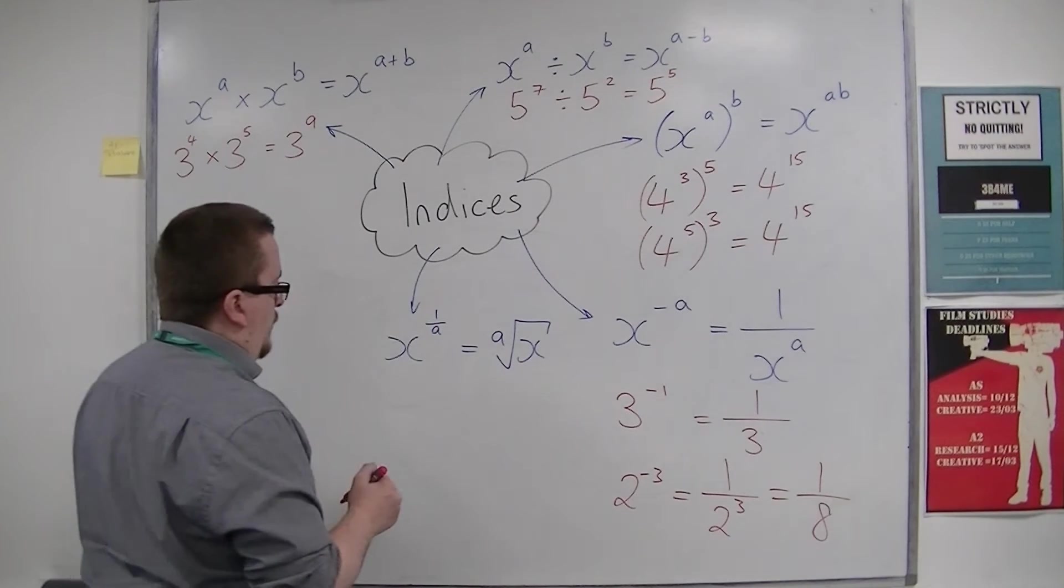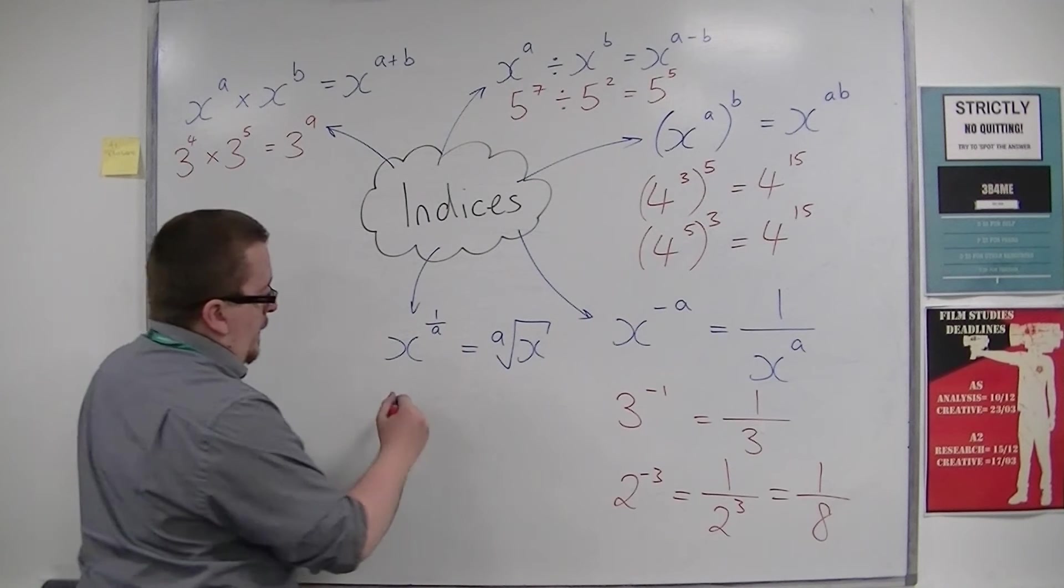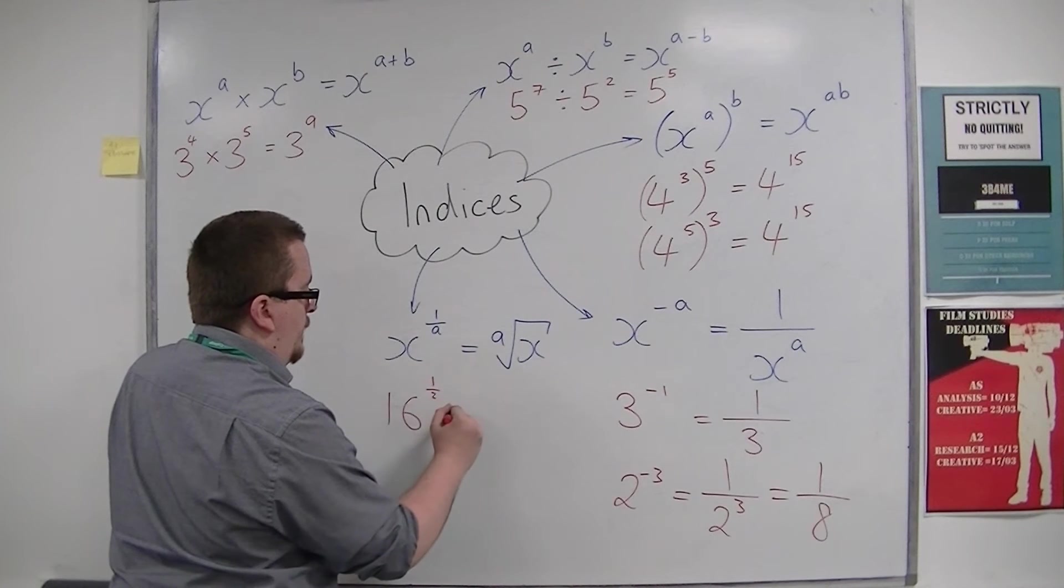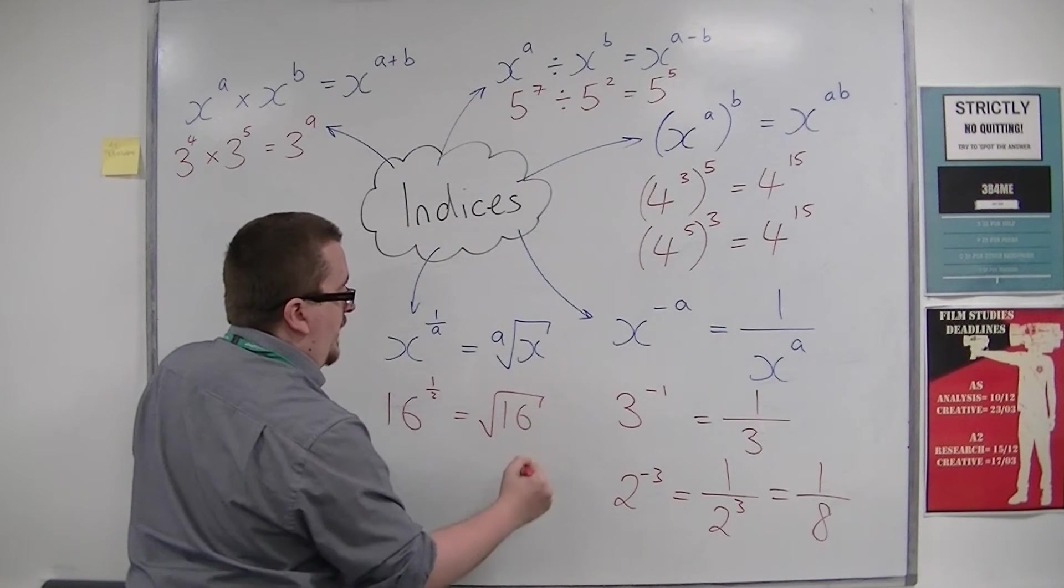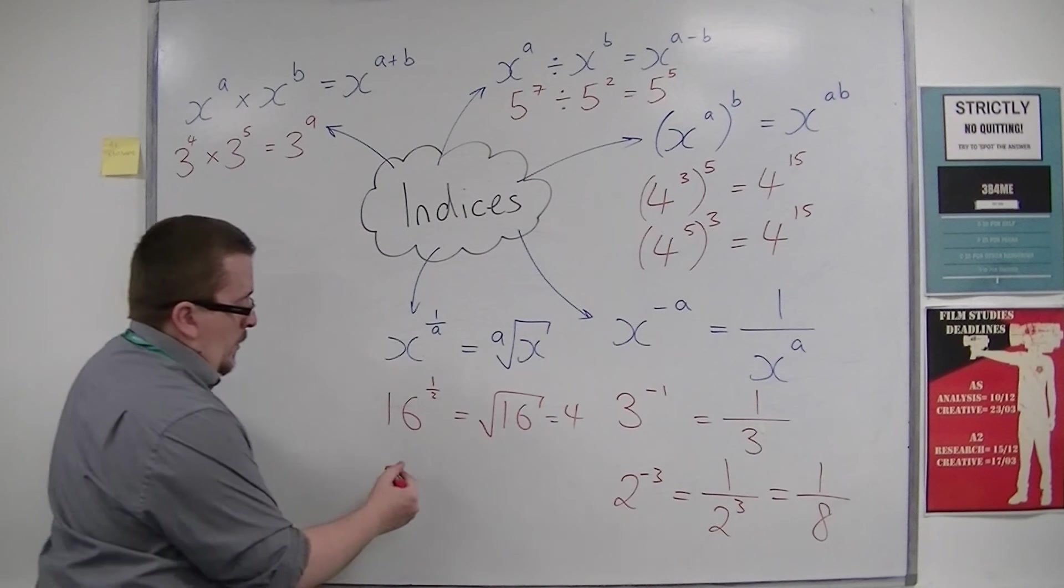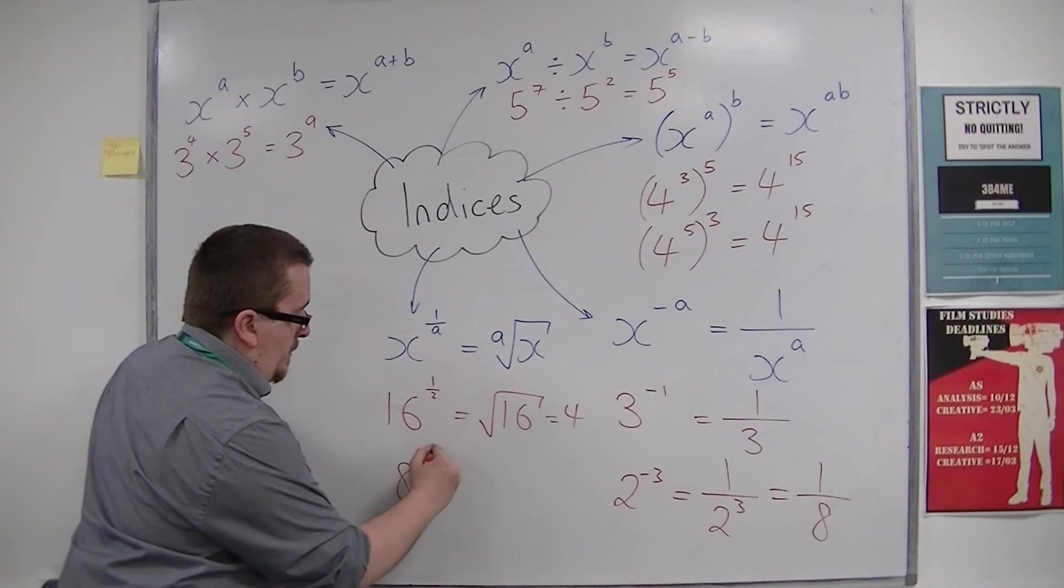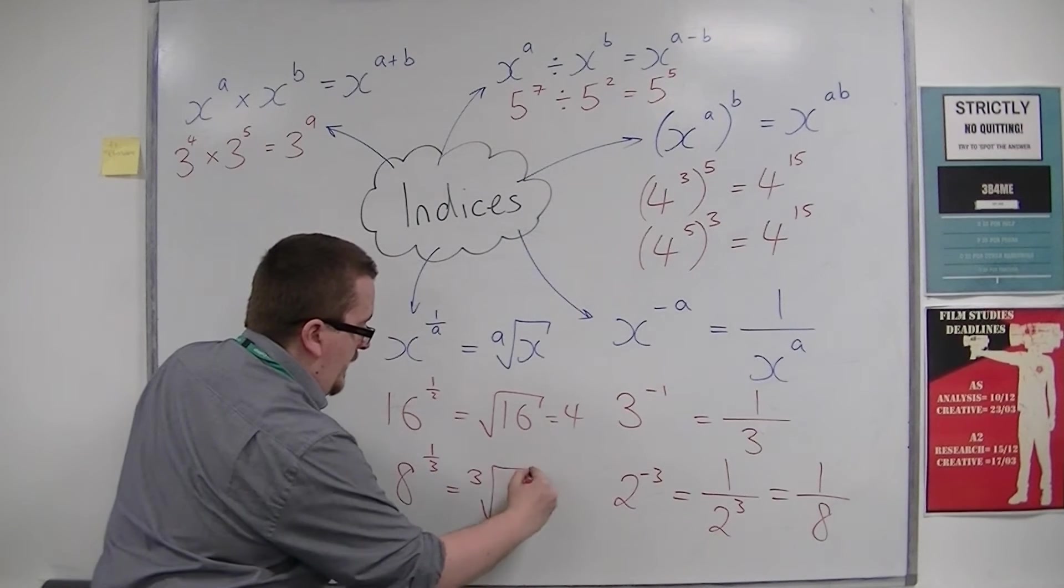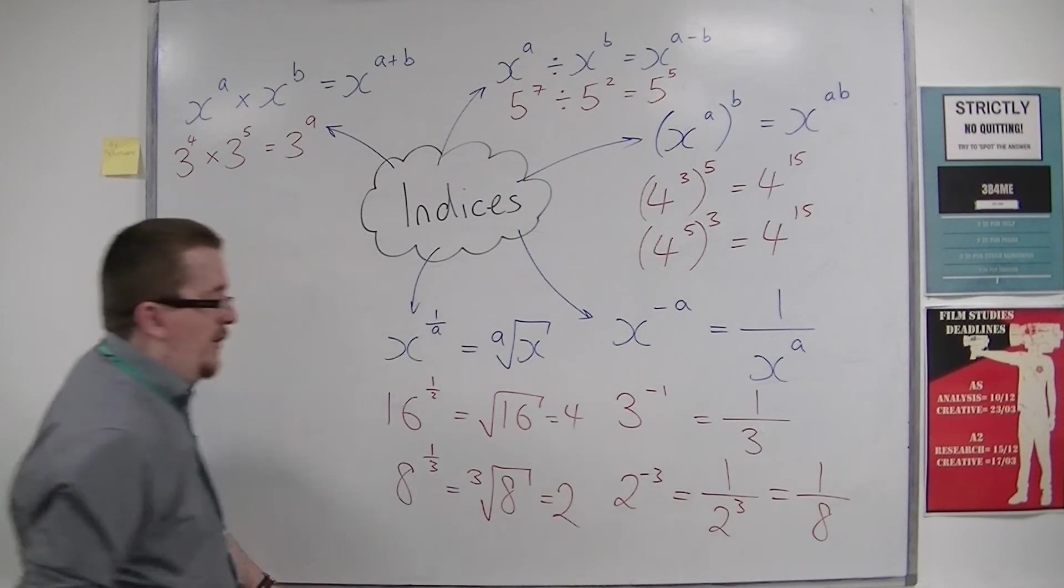For example, 16 to the power of a half is the square root of 16, which would be 4. Or 8 to the power of 1 third is the cube root of 8, which is 2.